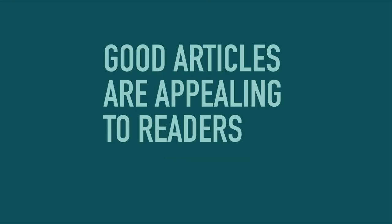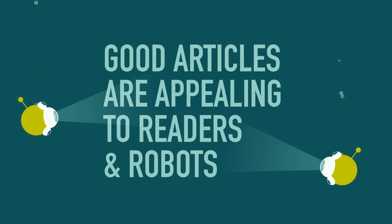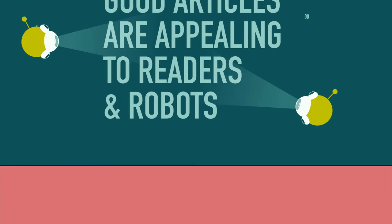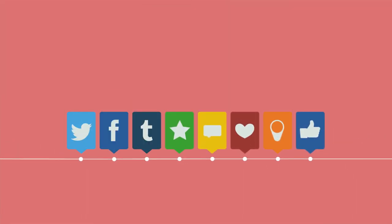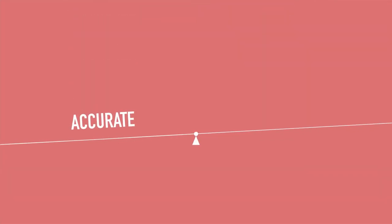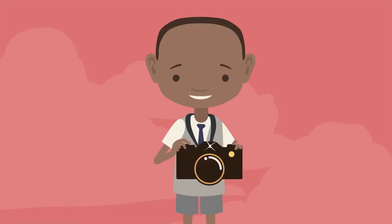A good news article should be appealing to the reader as well as to robots — those programs trailing the web on behalf of search engines. Leave internet breadcrumbs to help web crawlers find your stories. You can do this by sharing your stories on social media and posting links to your story on blogs and forums. Make sure your facts are accurate, balanced, and fair. Use good sources and good quality images.